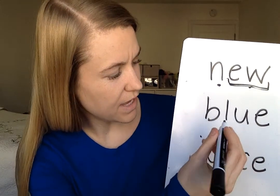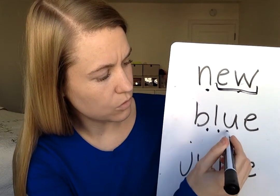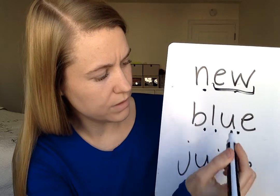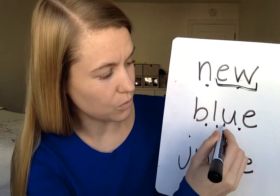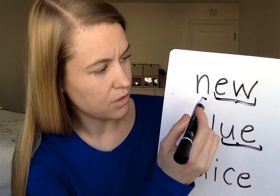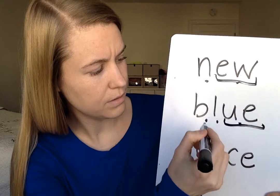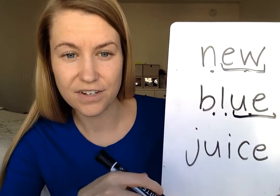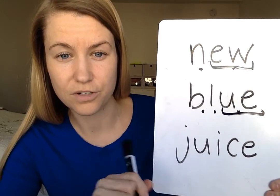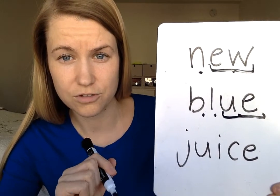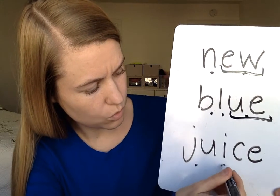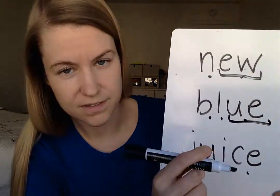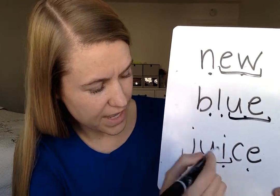Then we've got B, L, oo — with U-E making oo. N, oo, B, oo. And then down here for 'juice,' we've got J, oo, S — with the U-I making oo.